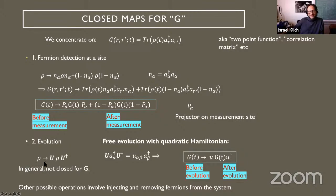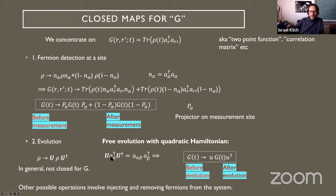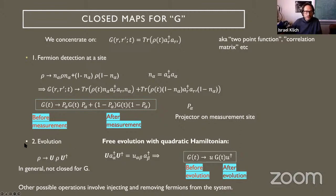For free evolution — quadratic Hamiltonians with no interactions — creation and annihilation operators evolve linearly, so G simply evolves as G → U G U†. You can also add or extract a particle. Inserting a particle at site 3 is equivalent to measuring whether a particle is there and placing one if absent; it sets G_{33} = 1 while killing off-diagonal correlations involving site 3. Extracting does the same but sets the density to zero.